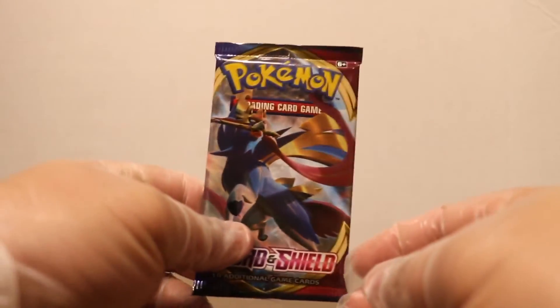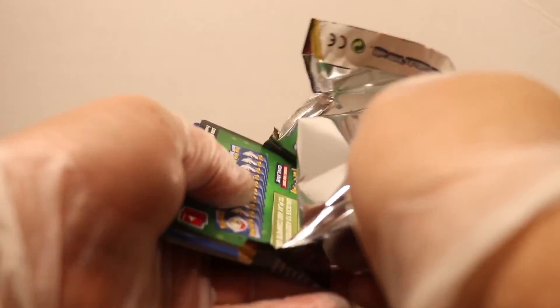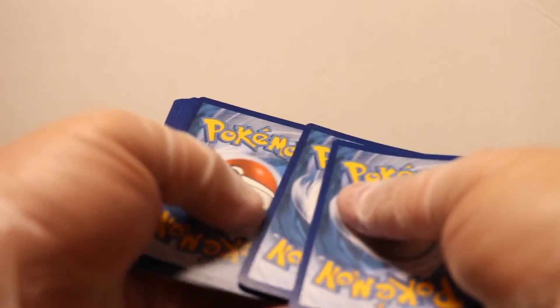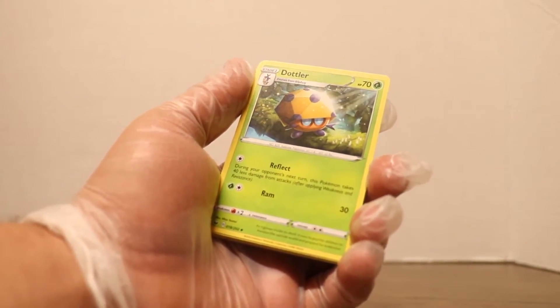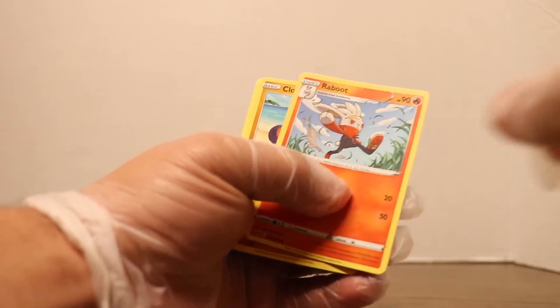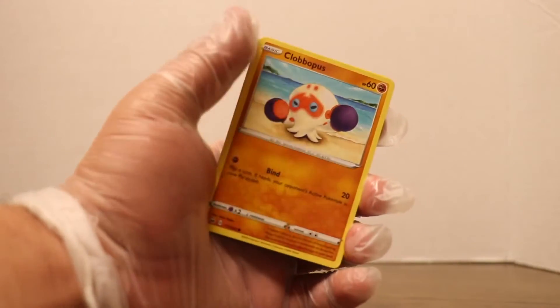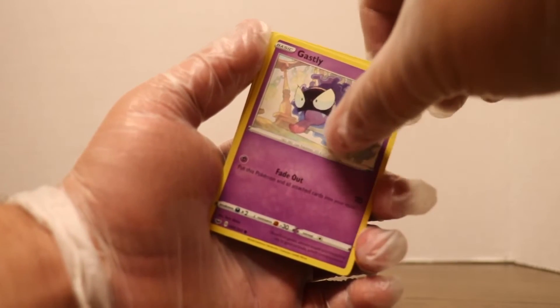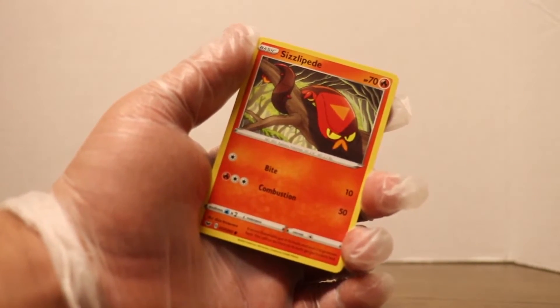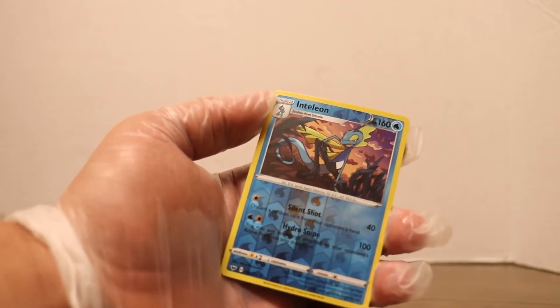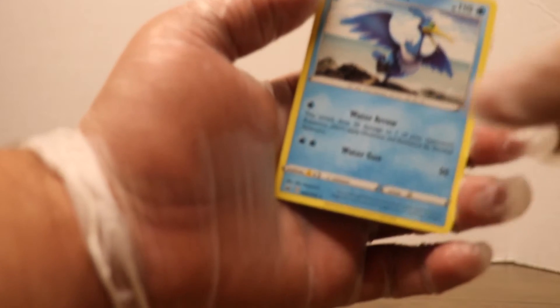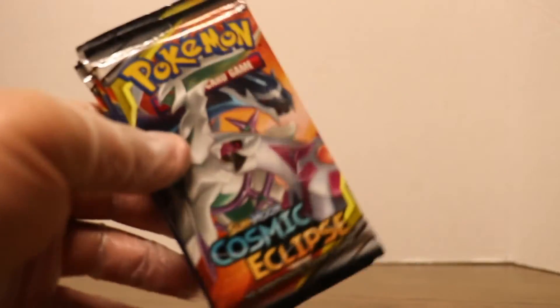Last pack. Can we pull the gold Zacian or a rainbow rare in this pack right here? We shall find out, and it doesn't look so, but who knows, could be a surprise, never can tell. We've got Energy, Drednaw, Galarian Stunfisk, Reboot, Clobbopus, Gastly, Rookidee, Sizzlipede, Snom, reverse Inteleon. The reverse Inteleon is probably by far the best reverse Water type in Sword and Shield right now, I think. That's just my opinion.